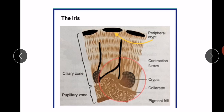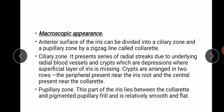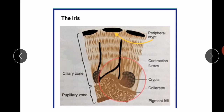Here you can see peripheral crypts, a contraction furrow, crypts, and the pigment frill. The anterior surface of the iris can be divided into a ciliary zone and a pupillary zone by a zigzag line called the collarette.